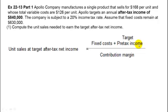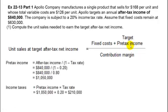We have to convert the after-tax income of $840,000 into a pre-tax income figure. If you know the after-tax income — which in this case is $840,000 — you convert it to pre-tax by dividing by 1 minus the tax rate. So 1 minus 0.20 is 0.80, and $840,000 divided by 0.80 gives us a pre-tax income of $1,050,000.